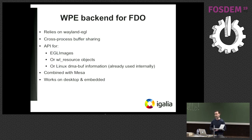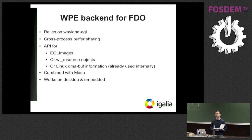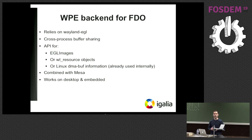I'm going to talk about one specific backend called FDO. Why is it called FDO? Because it relies on a lot of libraries from the freedesktop project. It depends on the Wayland EGL API, and it provides cross-process buffer sharing support. And it has API for EGL images, Wayland resources, and also Linux DMABuf support.